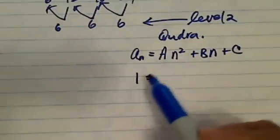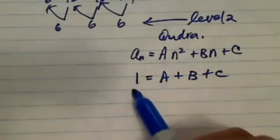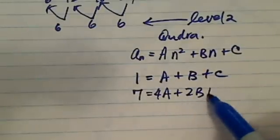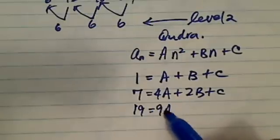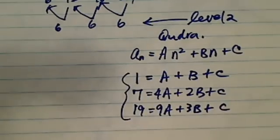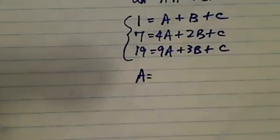So we have 1 is equal to a plus b plus c, that's when n equals 1. Next one, when n equals 2, you have this equation. And the next one, you have 19, that's when n equals 3, and then you have this equation. So a system of three equations, three unknowns. It's relatively easy to solve. It's a little tedious work, but it's relatively easy.